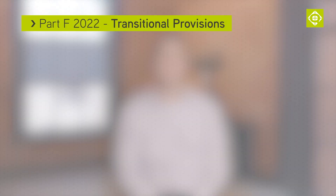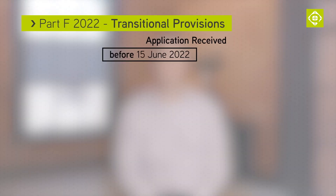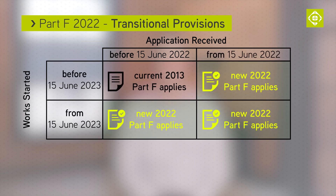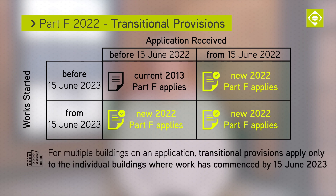Transitional provisions apply to this document. To use the old version of Part F, an application must be received before 15 June 2022 and work must start on site before 15 June 2023. For multiple dwellings or buildings on an application, work on each unit must have commenced for the transitional provisions to apply.